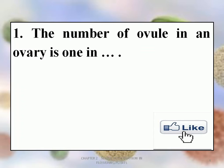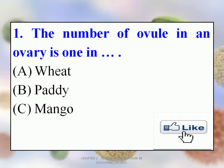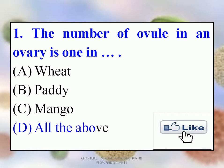Let's move to the first question of today. The number of ovules in an ovary is 1 in: A. Wheat, B. Paddy, C. Mango, D. All the above. The correct answer is D — all of the above. Yes, friends, wheat, paddy and mango are all examples of a single ovule-containing ovary.